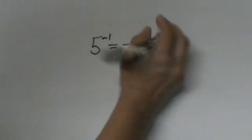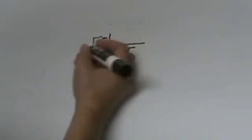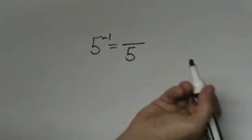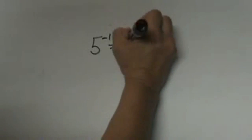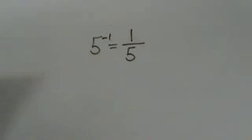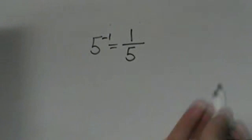You don't have to write that one exponent, but since it's on the bottom, what's on the top? Well, you always have a one on top — so if you don't have anything, it's actually a one, so you can make it into a fraction.